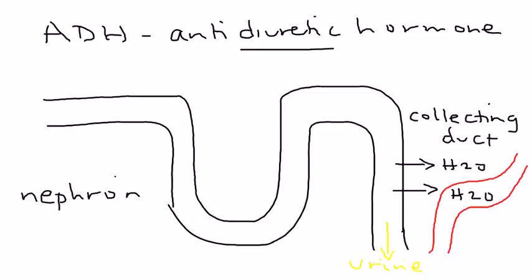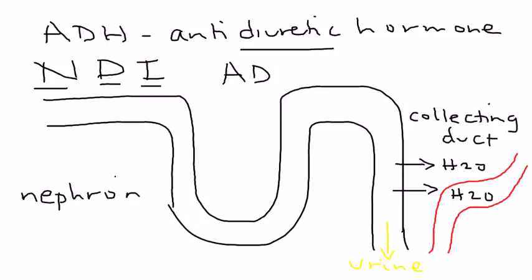A lot of the water has been brought back into the circulation. Now, what happens in nephrogenic diabetes insipidus — NDI — is the pituitary does release normal amounts of ADH, but the kidney is unresponsive. And that's the key.